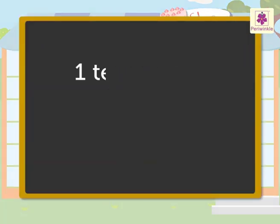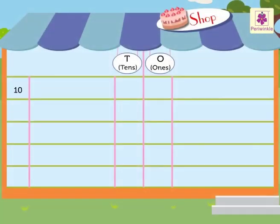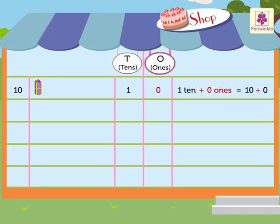Here, each one ten is represented by the group of ten candles, and each one one is shown by one candle. Ten is a two-digit number; it is written in the tens and ones column. It has one ten and zero ones. We place the one of the one ten in the tens column and the zero of the zero ones in the ones column.